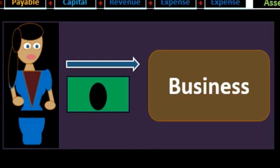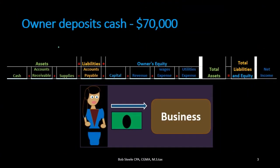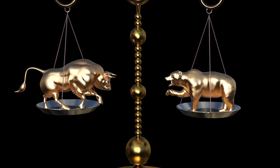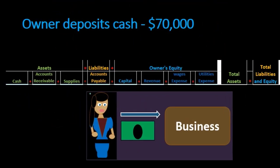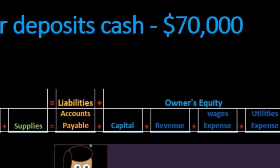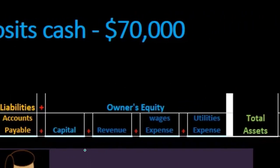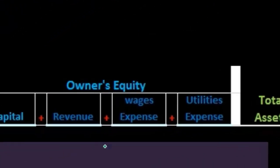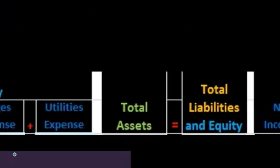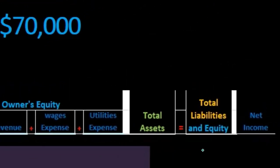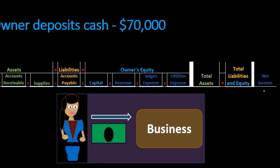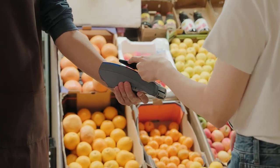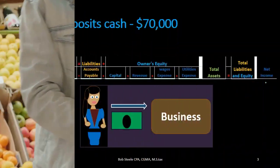Assets equal liabilities plus equity will always remain in balance. In the asset accounts we have cash, receivables, and supplies; under liabilities we have accounts payable; and in owner's capital we have the capital account and the entire income statement of revenue and expenses. Total assets will always equal total liabilities and equity, and we'll see the impact on net income.